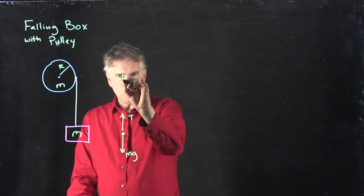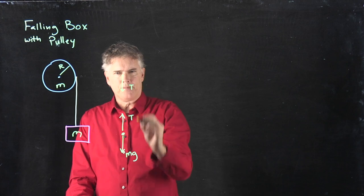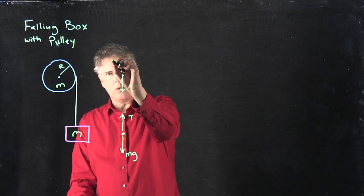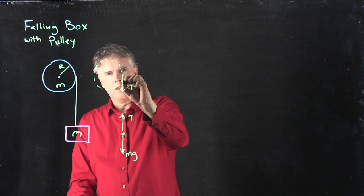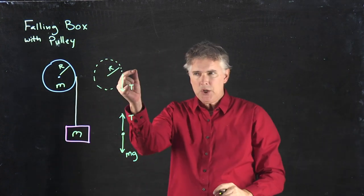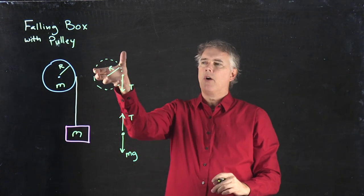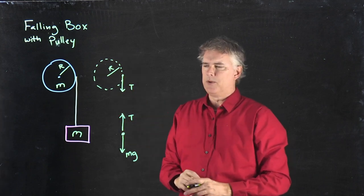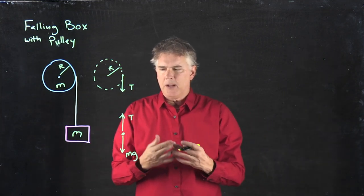there is a tension going down. I'm just going to redraw the wheel here. And that tension acting at the radius R gets the disc to rotate. So let's see if we can make some sense of this.